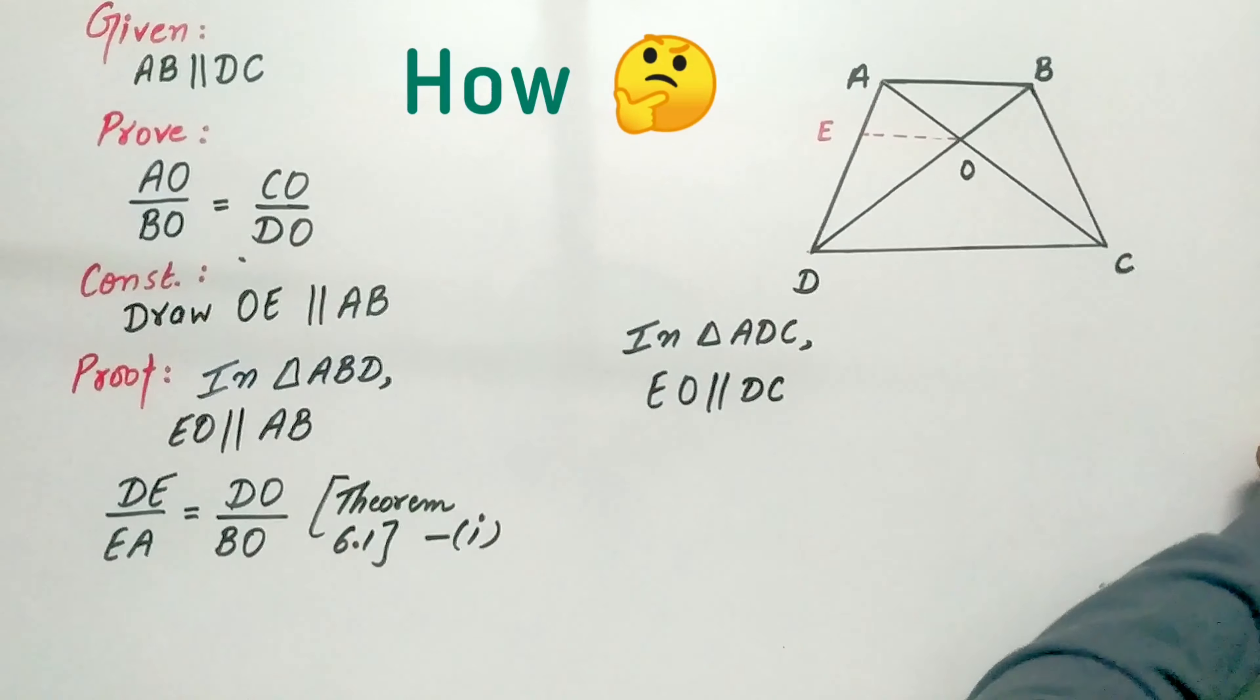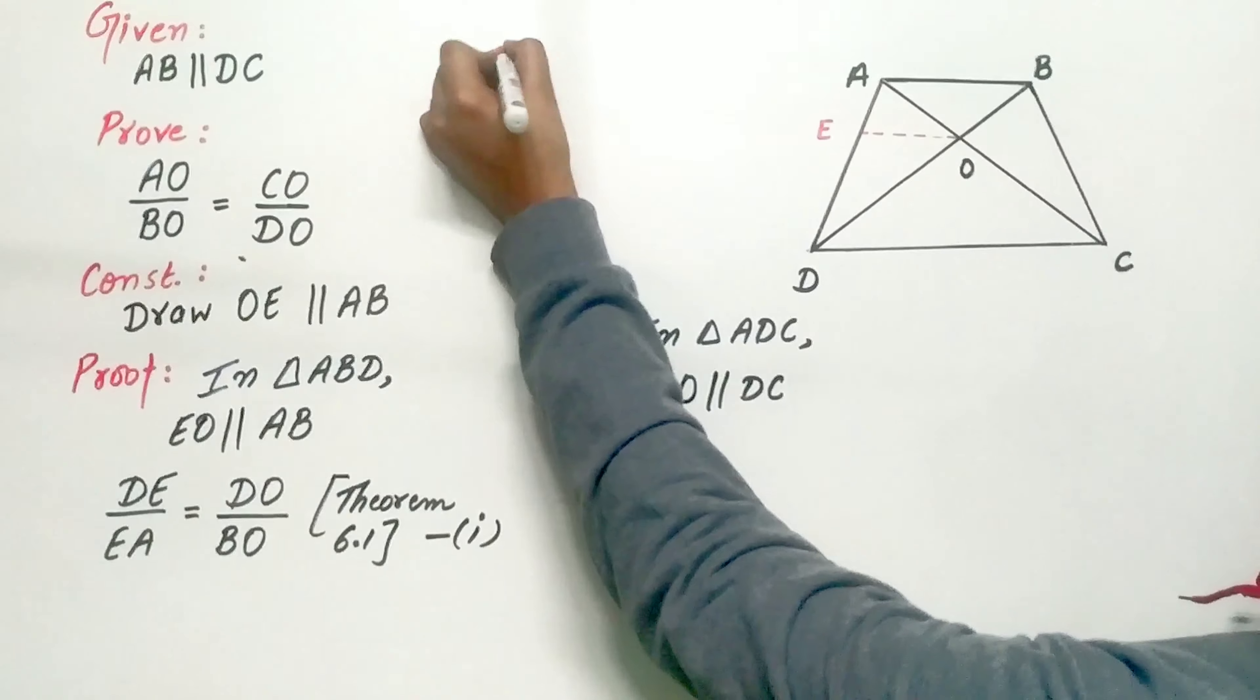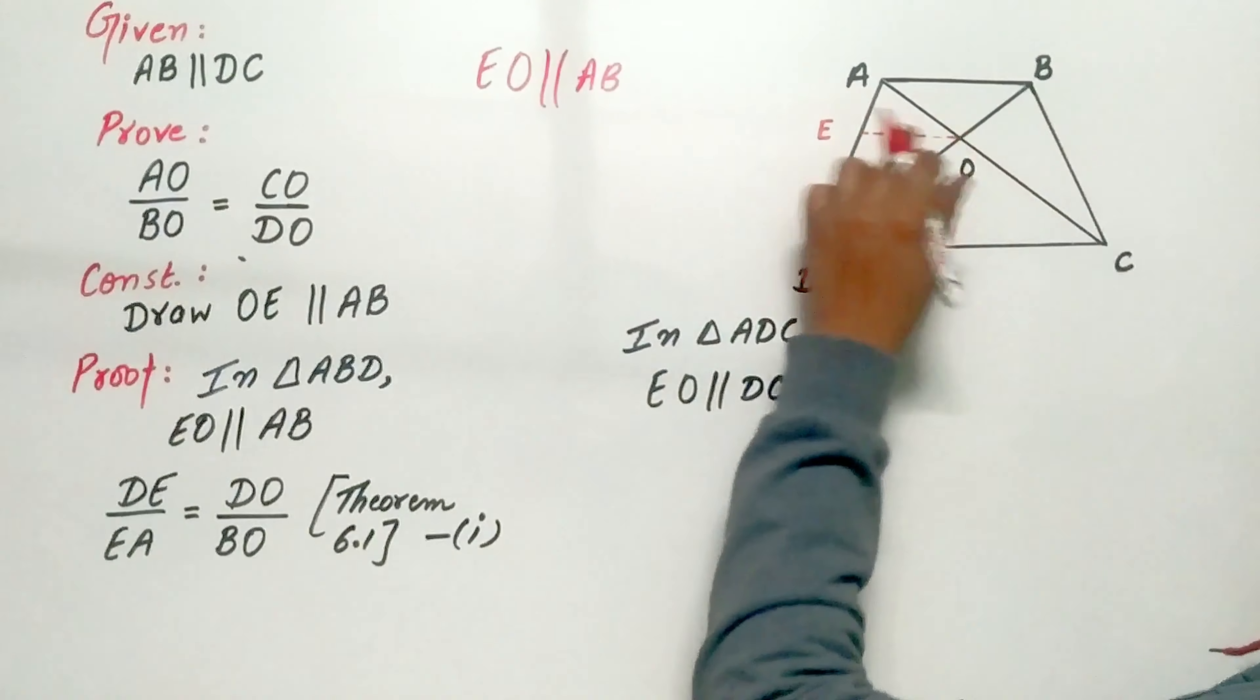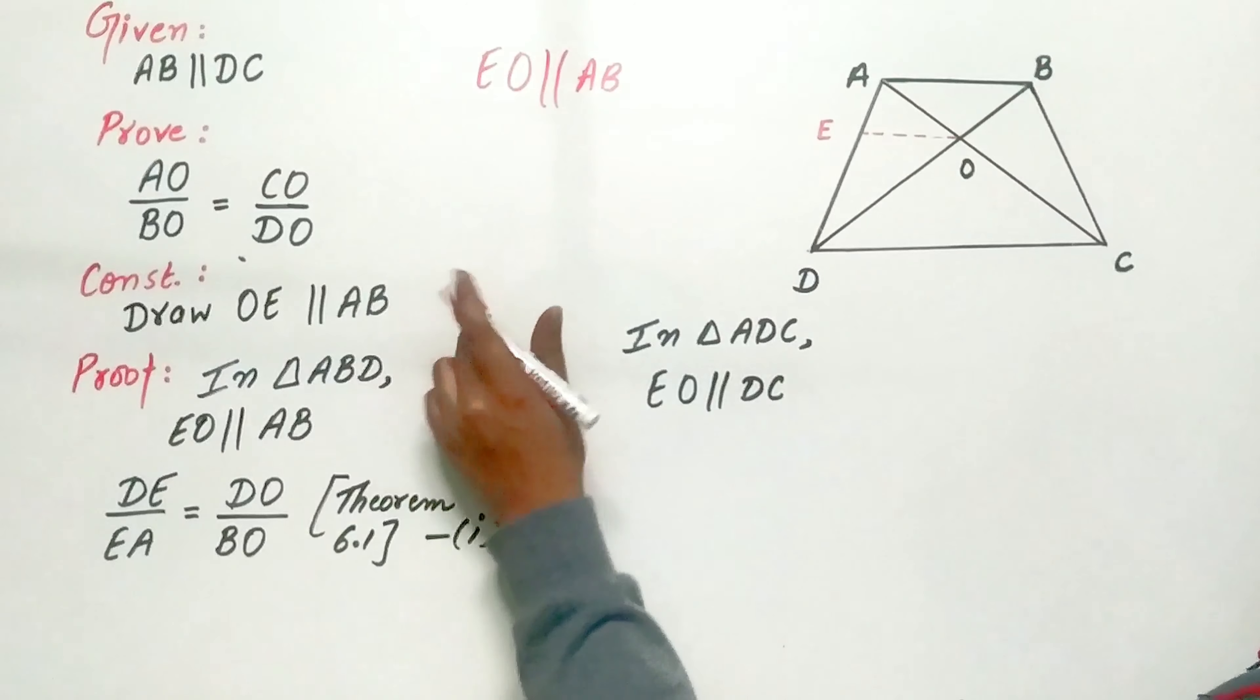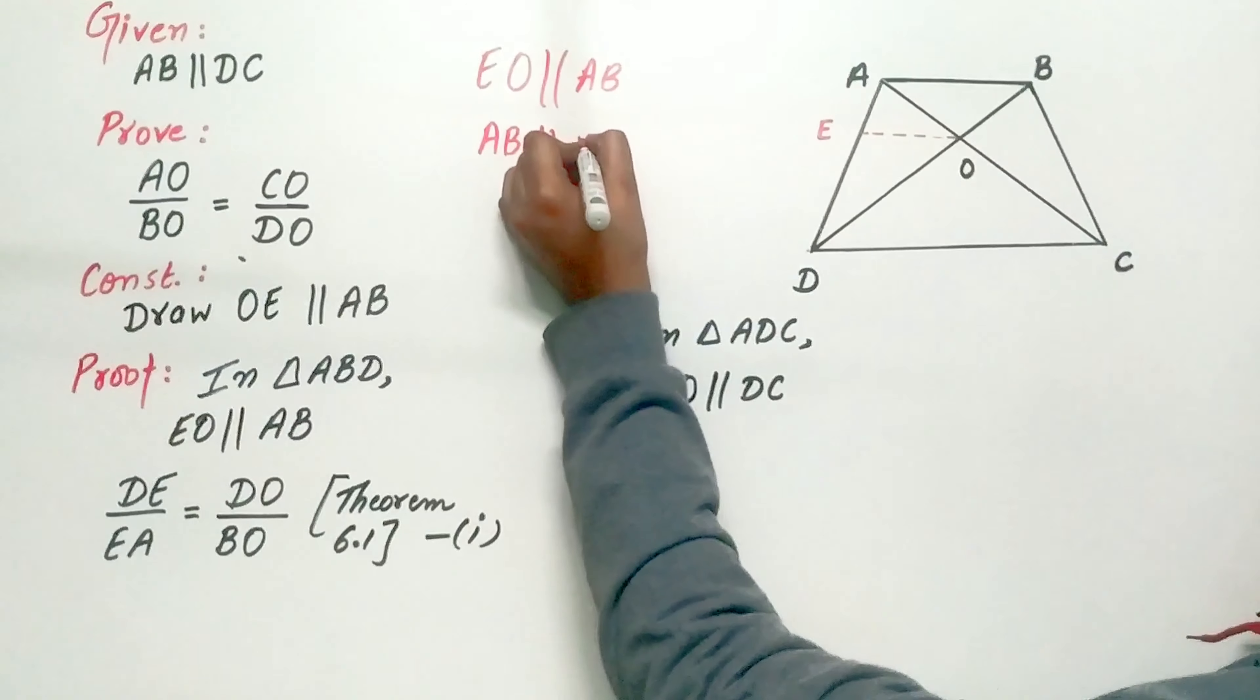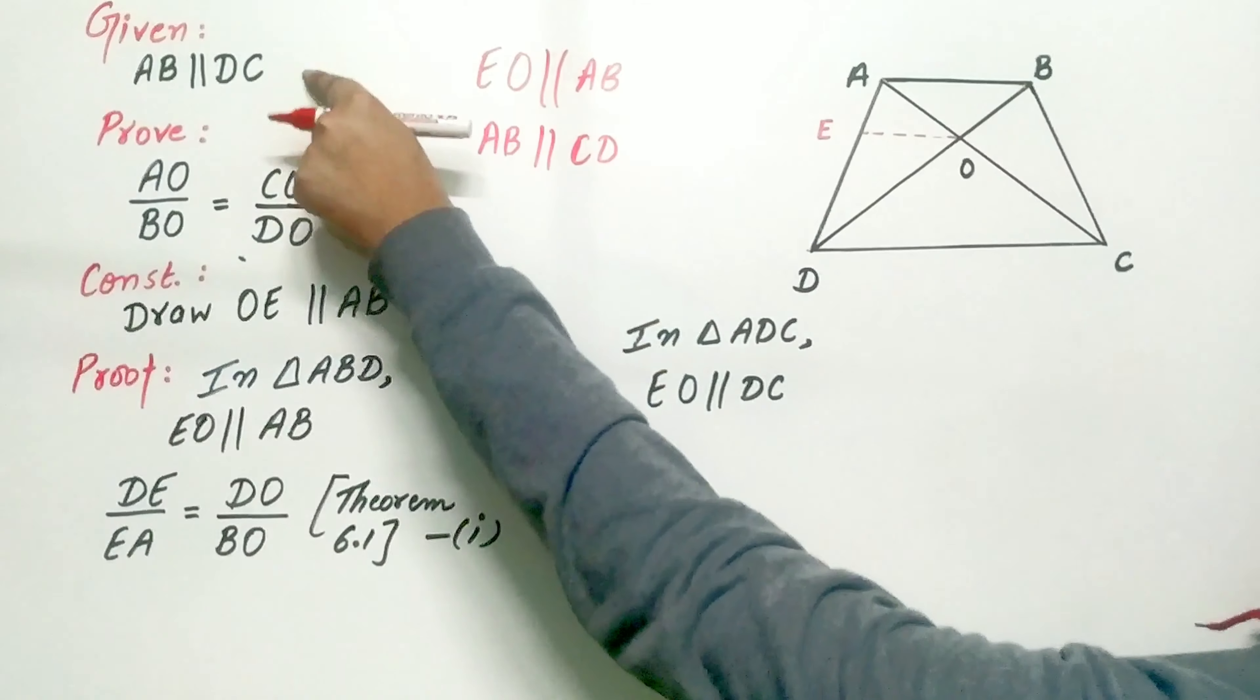How? Now look. EO is parallel to AB by construction. AB is parallel to CD, that's given to us.